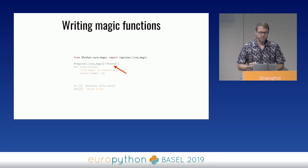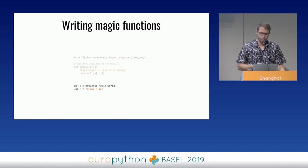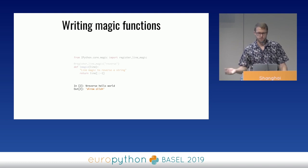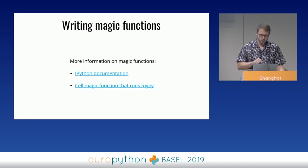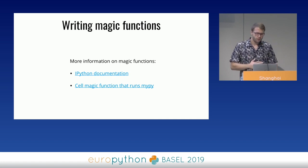I'm passing a parameter to the decorator that will be used as the name of the magic function. If I don't do this, my magic function will be called the same as the function I'm decorating — in this case `lmagic` — so I want to change the name to something more descriptive. After running this code in IPython, my new magic function is ready to use and will reverse anything I pass. Since all arguments to magic functions are passed as strings, I don't have to worry about checking types.